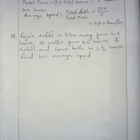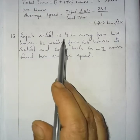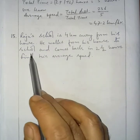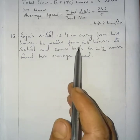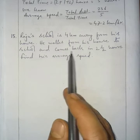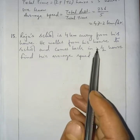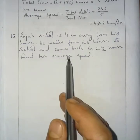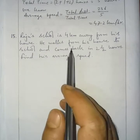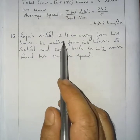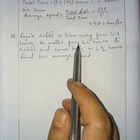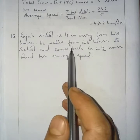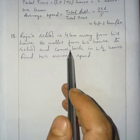Question number 15. Raju's school is 4 kilometers away from his house. He walks from his house to school and comes back in 2 and a half hours. Find his average speed. So Raju walks from his house to school — that distance is 4 kilometers — and then comes back.